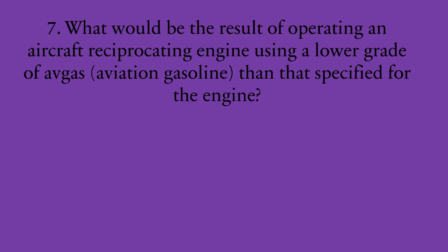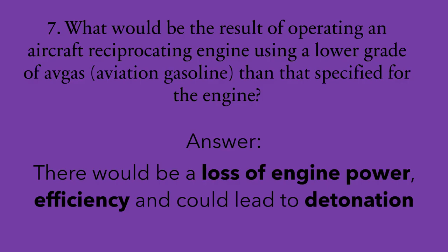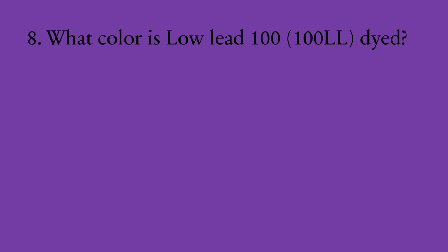Number seven: what would be the result of operating an aircraft reciprocating engine using a lower grade of avgas than specified? There would be a loss of engine power, efficiency, and it could lead to detonation. Number eight: what color is low-lead 100, or 100LL, dyed? The answer is blue. By the way, 80 is dyed red and 100 is dyed green, just in case your examiner asks that question instead. Number nine: what are the functions of tetraethyl lead in avgas? It is used to reduce detonation, as well as to lubricate.